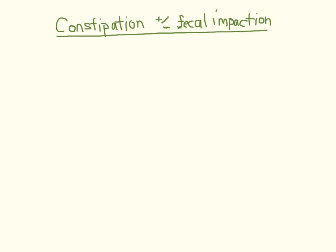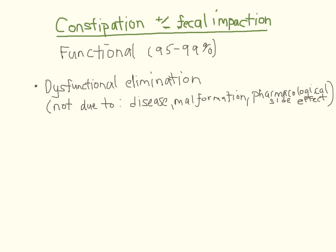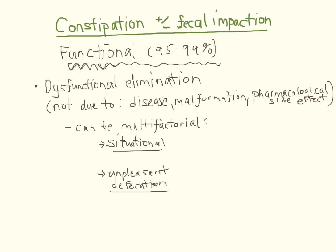Chronic constipation may lead to acute and debilitating abdominal pain, possibly with anorexia or vomiting, and this is especially true when fecal impaction develops. Because over 95% of pediatric constipation is functional, understanding its pathophysiology is needed to manage acute pain and counsel patients and family to prevent recurrences. Children with functional constipation, by definition, have impaired elimination without an underlying pathology. However, there are often reasons why, mostly related to situational withholding or unpleasant defecation associated with hard or dry stools.